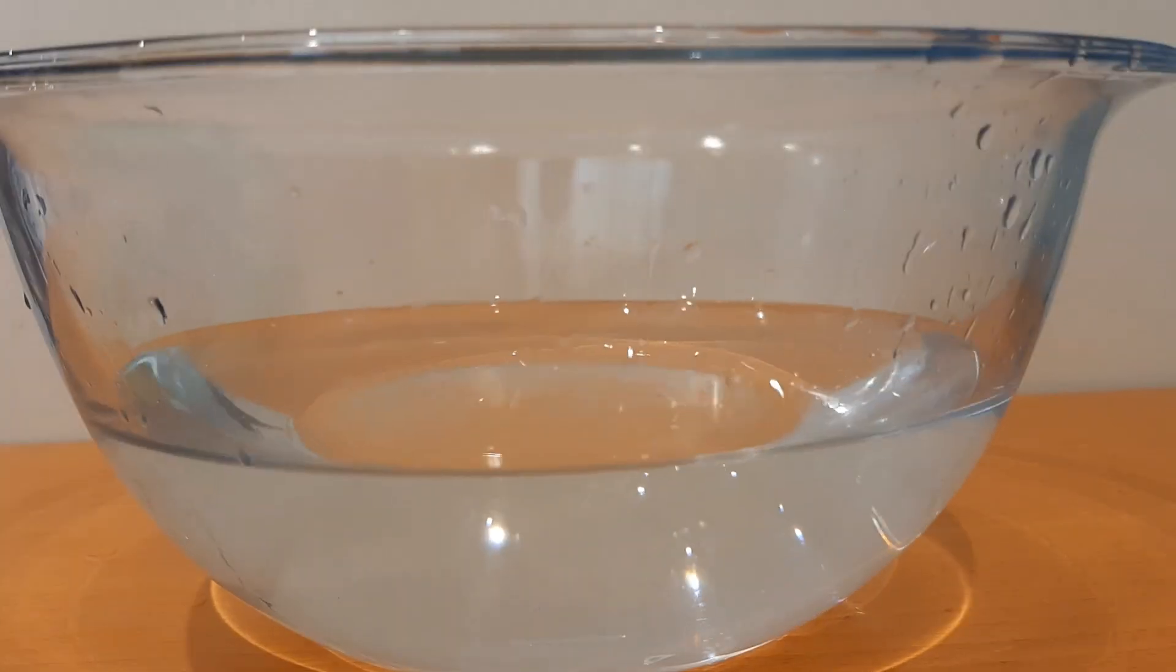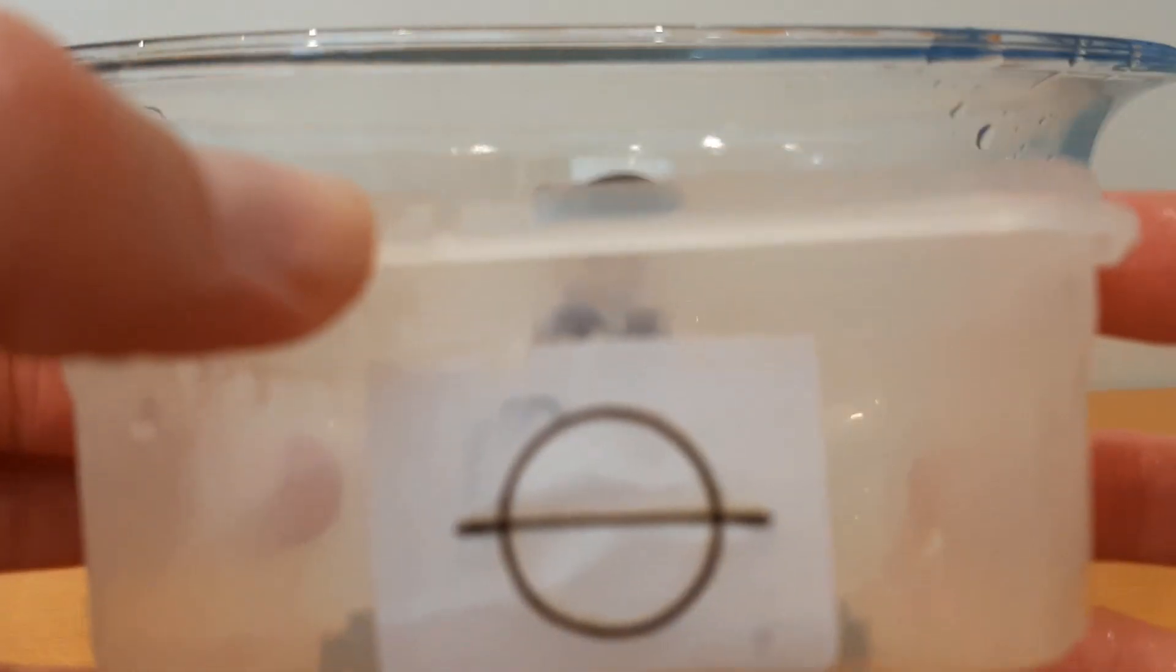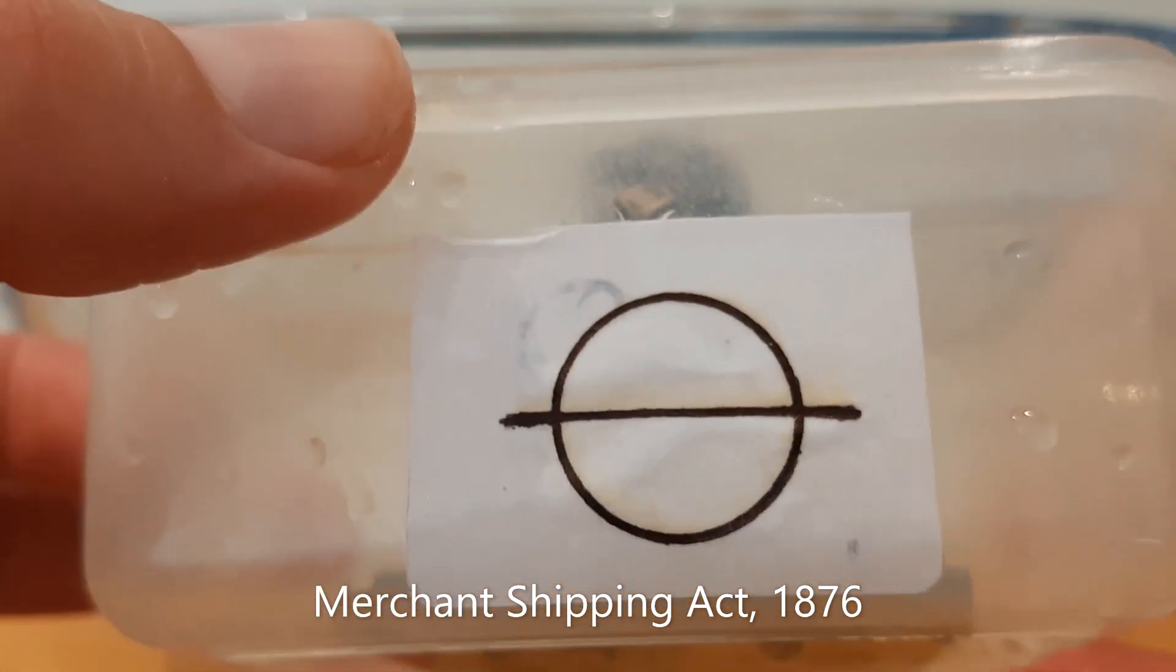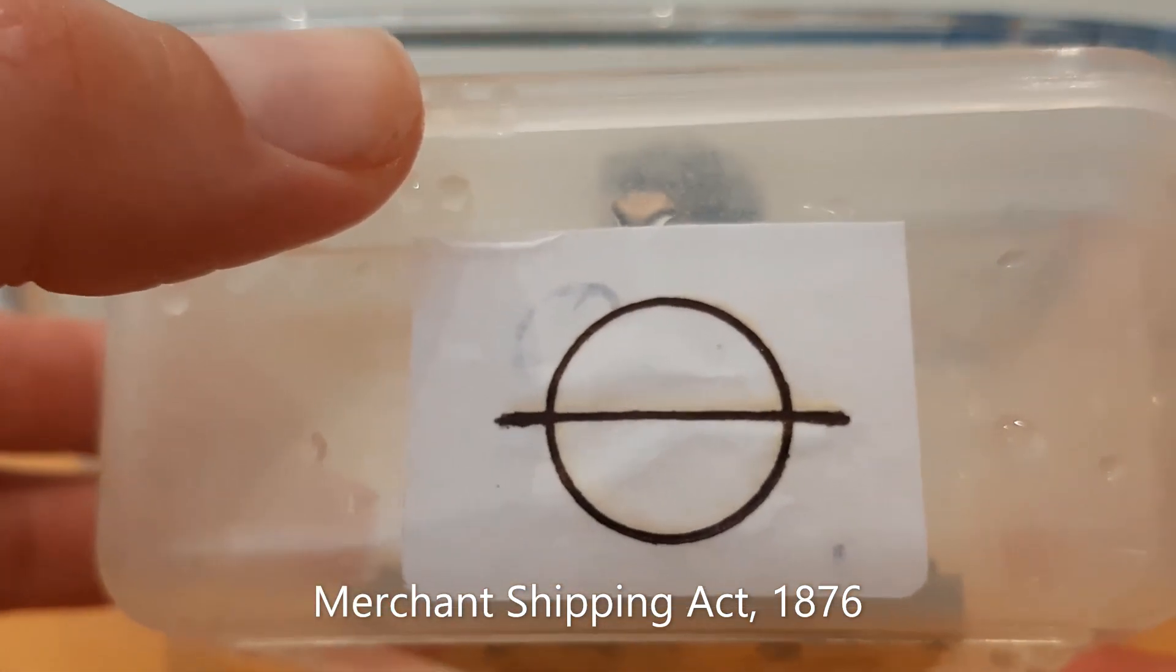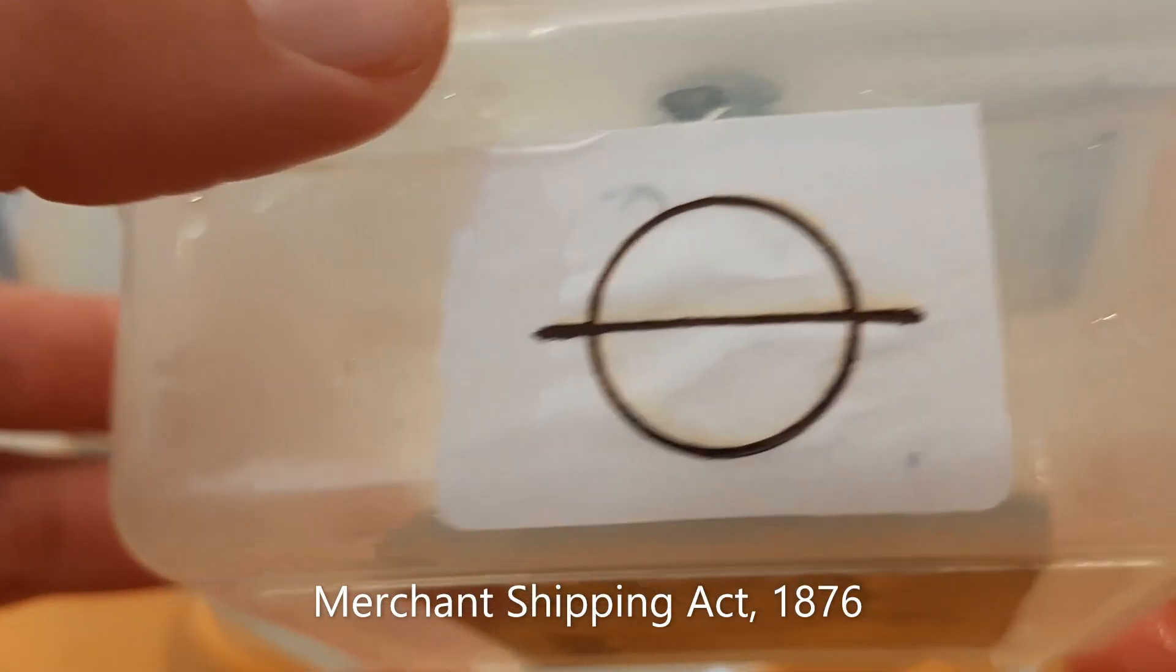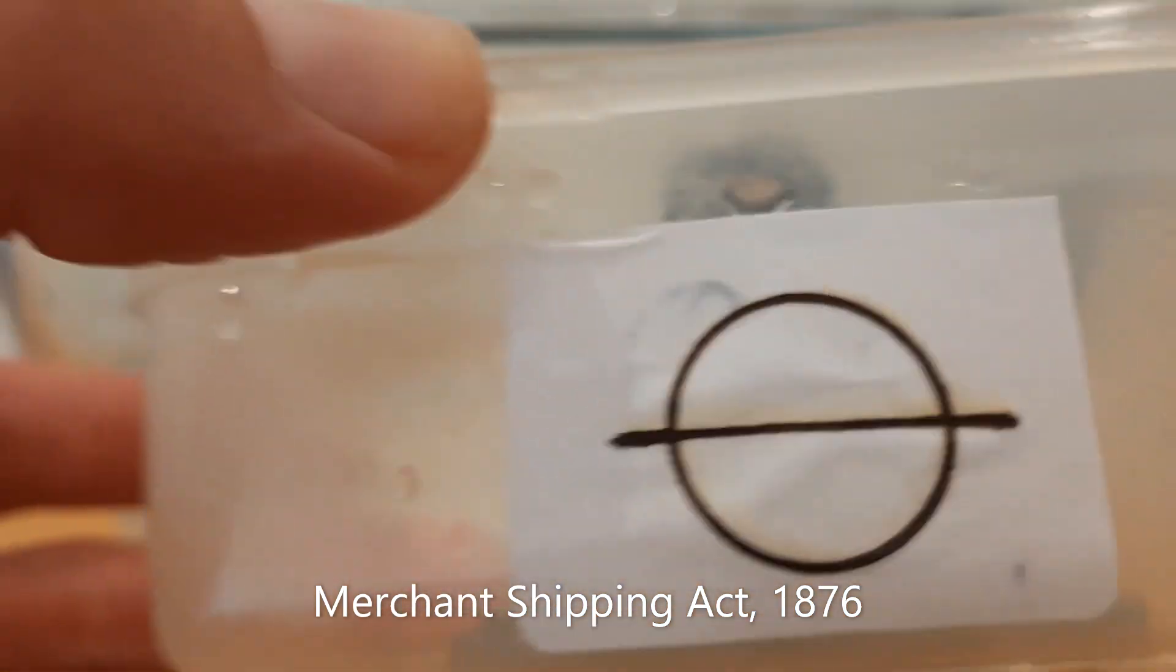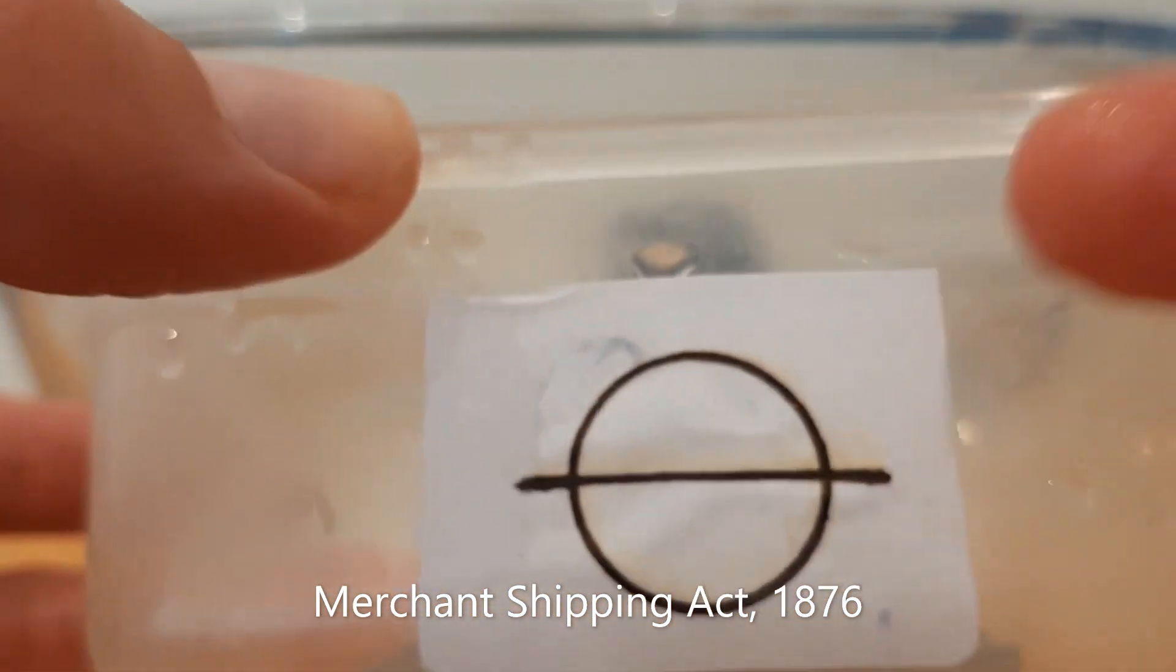After lots of research by organizations like Lloyd's Register, an MP called Samuel Plimsoll managed to eventually get legislation through for the Merchant Shipping Act of 1876, where this little line, a load line, had to be painted on the side of merchant ships.